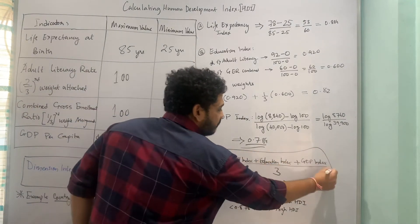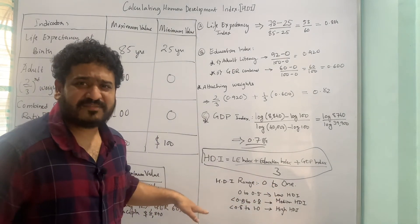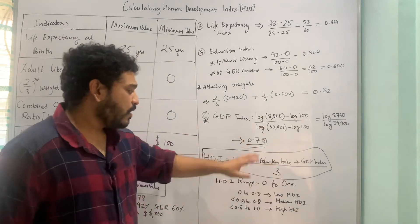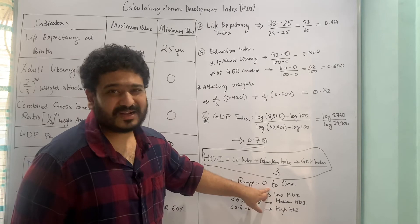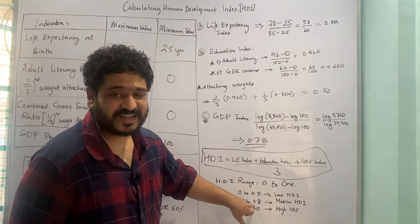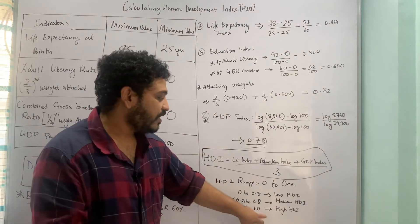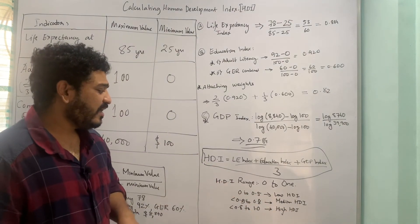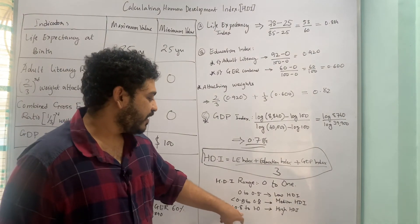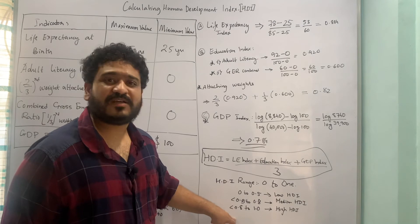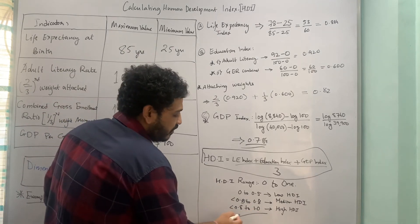The range of the human development index is from 0 to 1, where 0 denotes the least developed and 1 denotes the best. This range is classified into three categories: HDI from 0 to 0.5 is low HDI; greater than 0.5 to 0.8 is medium HDI; and greater than 0.8 to 1.0 is high HDI. Most developed countries, such as the Scandinavian nations like Norway and Sweden, fall in the high HDI bracket above 0.8. Please check what India's HDI value is.